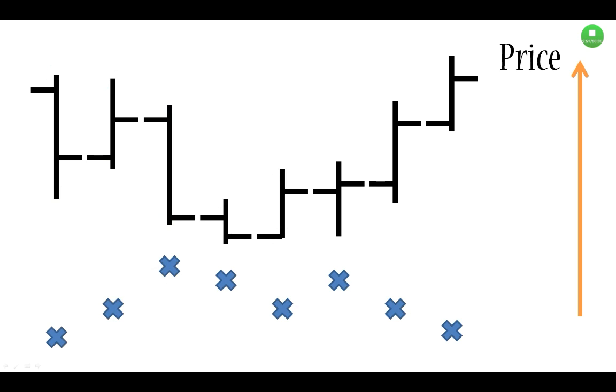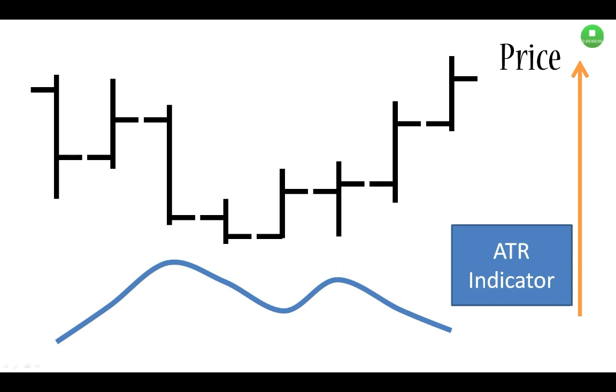Now what we're going to do is connect the crosses with a line, and that's what it looks like. What we've actually constructed is the average true range indicator with a period of four.